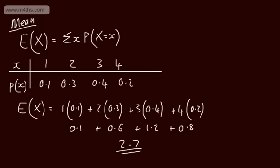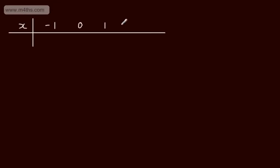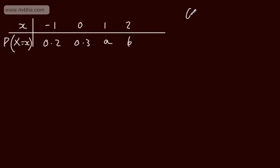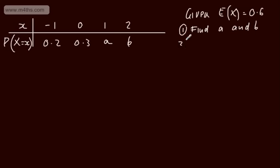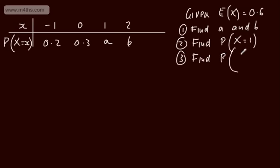Let's look at a slightly more challenging example. We have a probability distribution with values x = −1, 0, 1, and 2, with probabilities 0.2, 0.3, a, and b respectively. We're told the expected value of X is 0.6. We want to find a and b, find the probability that X equals 1, and find the probability that 0 < X ≤ 2.